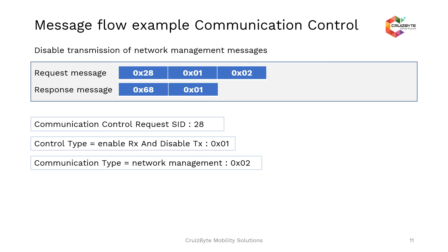Here is an example for communication control SID 0x28. The request message is 0x28 followed by 0x01 as the control type — that is, enable RX and disable TX. And 0x02 is the network management message control. That means this request will ask the ECU server to enable network management communication reception only, and disable transmission messages from the ECU server. The positive response received is 0x68 followed by 0x01, which is the control type.